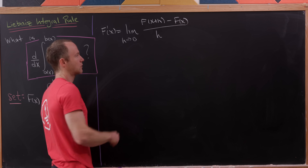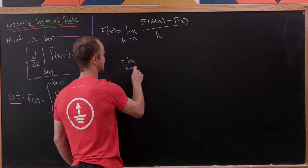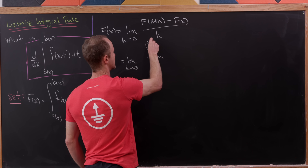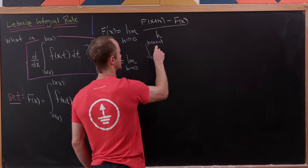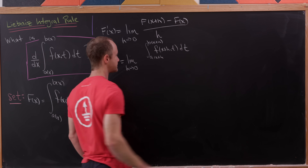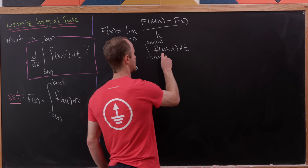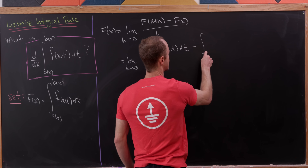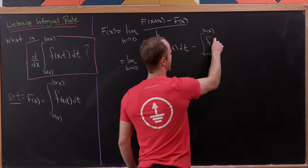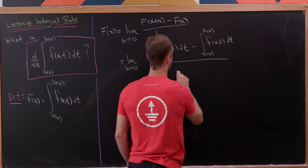That quickly turns into the following object: the limit as h goes to zero of the integral from a(x+h) to b(x+h) of f(x+h, t) dt — that's our capital F(x+h) — minus the integral from a(x) to b(x) of f(x, t) dt, all over h.